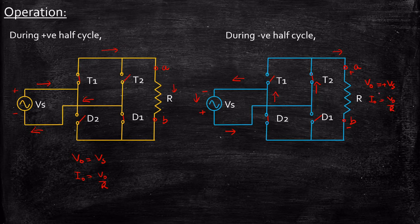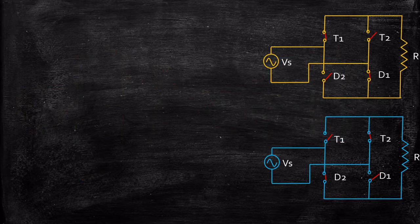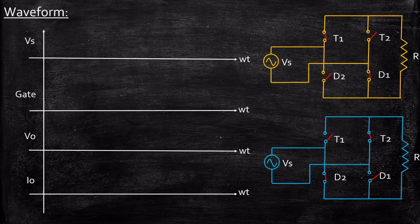This is very important for analyzing the waveforms. We need to know during positive half cycle what is Vout, and during negative half cycle what is Vout. If we know this, understanding the waveform is very simple. The waveform can be divided into four sections: the supply voltage Vs, the gate pulse, the output voltage Vout, and the output current Iout. The source voltage is sinusoidal in nature.